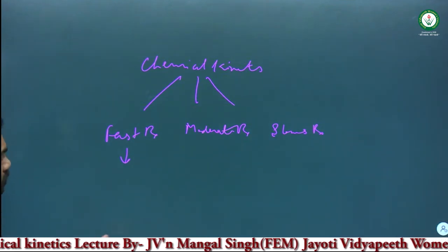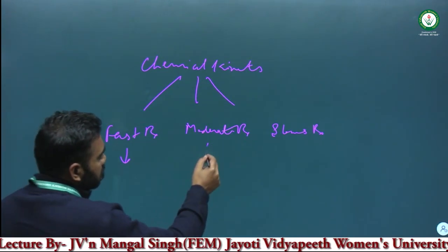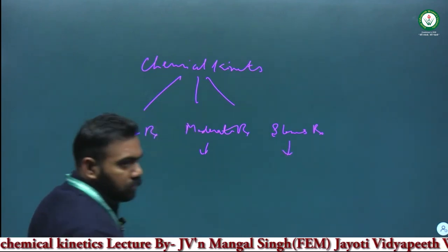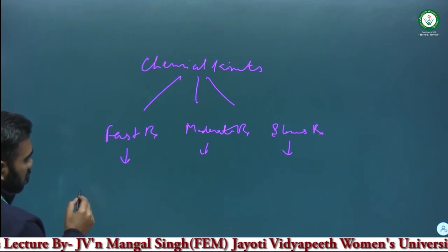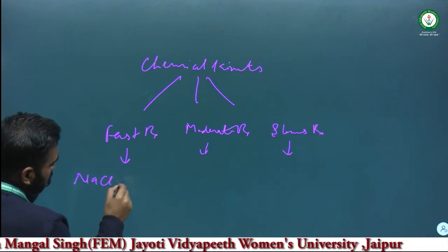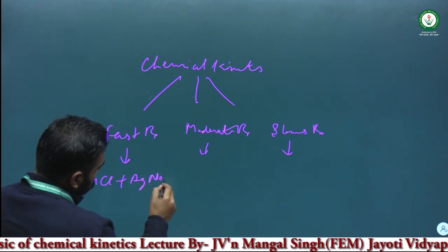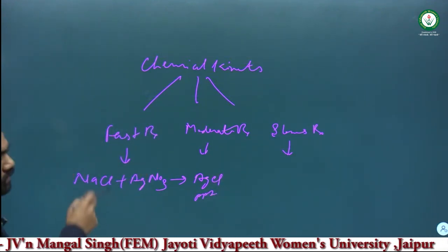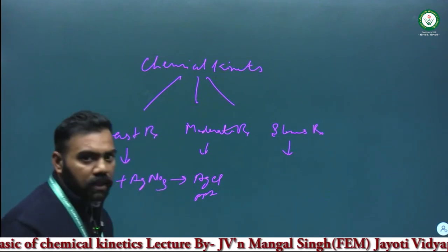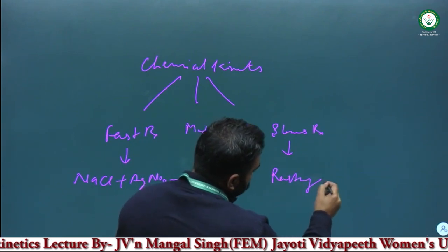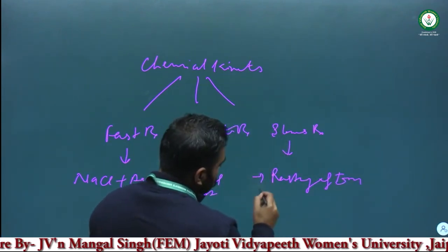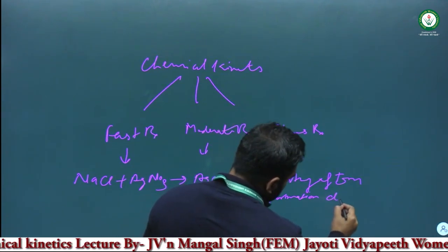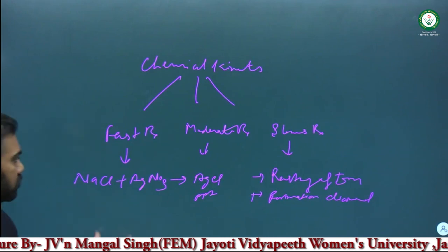Fast reactions are those which are instantaneously converted into the product. Slow reactions are those which have a very slow rate of reaction. For example, in case of fast reactions: sodium chloride plus AgNO3 gives AgCl precipitate instantaneously — this is a fast type of reaction. Examples of slow reactions include rusting of iron and formation of diamond.